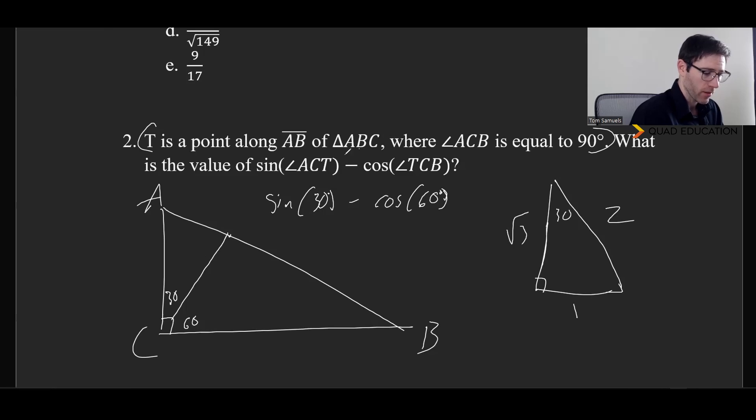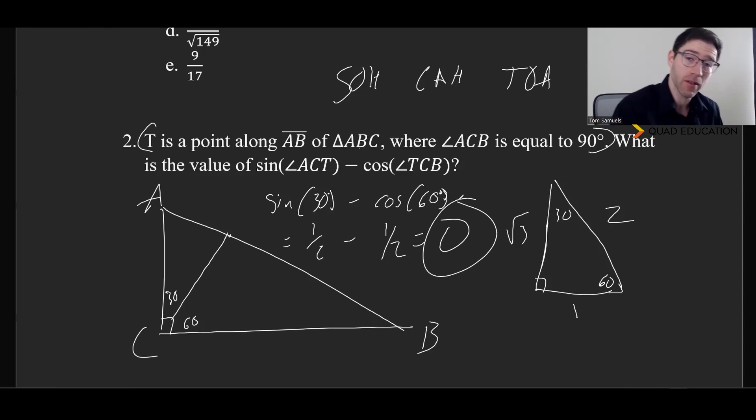So the sine, we're always going to write SOH-CAH-TOA. And we know that's SOH-CAH, so it's those two. That's the opposite of the 30 divided by the hypotenuse. So that's 1 over 2. And then the cosine of 60, that's the adjacent, which is 1, divided by the hypotenuse, which is 2. And hey, that's 0. So our answer for that one is just 0.